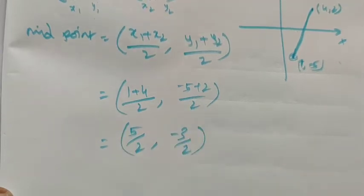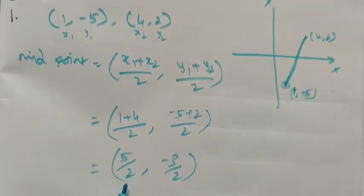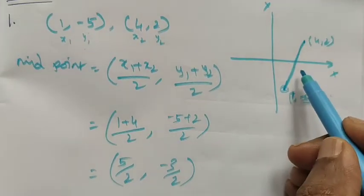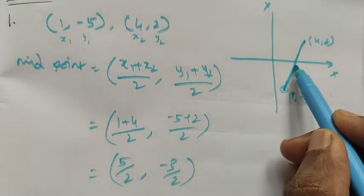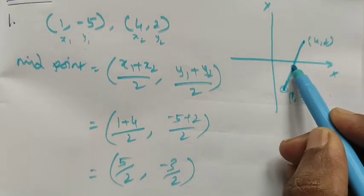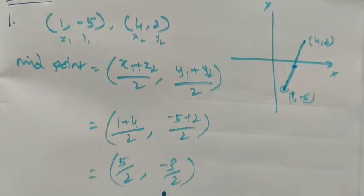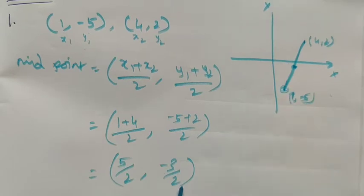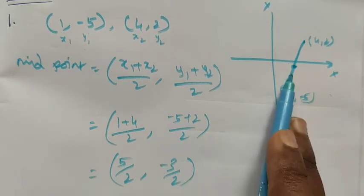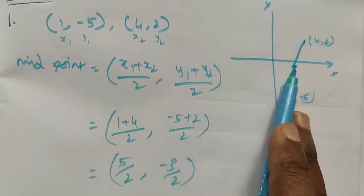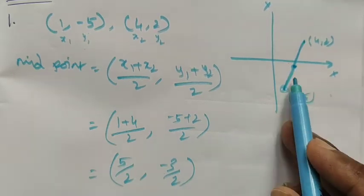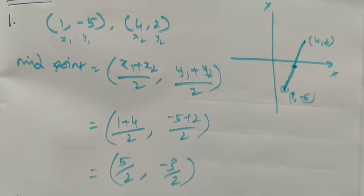This is the midpoint: (5/2, -3/2). Since the y-value is minus 3/2, the midpoint lies in the fourth quadrant.